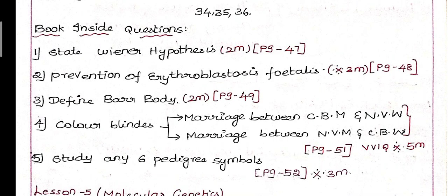For book inside questions, the first is 'State Werner Hypothesis', which is a 2-mark question on page number 47. Next is 'Prevention of Erythroblastosis Fetalis', which is an important 3-mark question.